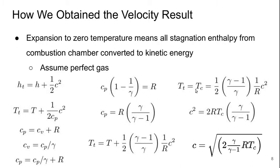Now noting that in our combustion chamber, the temperature Tc is the stagnation temperature because the velocities are negligible there, we can replace Tt with Tc. And then solving for c squared, we get that c squared is 2RTc times gamma over gamma minus 1.